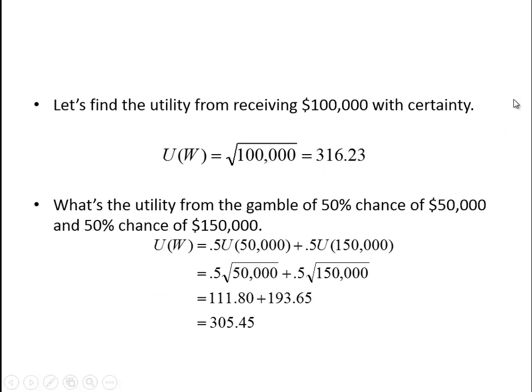Let's take a look at an example. Let's find the utility for a person receiving $100,000 with certainty. By definition, it's just the square root of the amount of wealth they have. So if we take the square root of 100,000, we get 316.23.